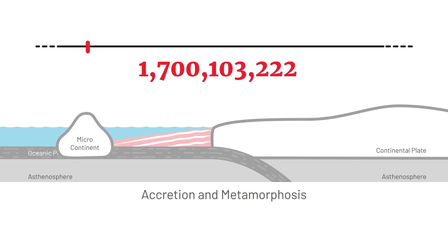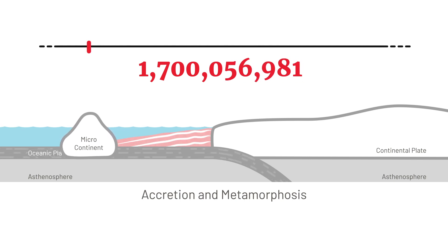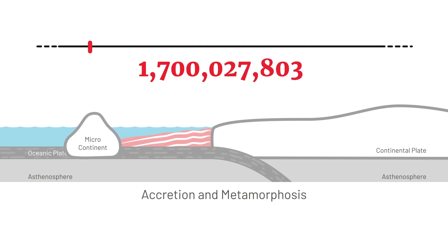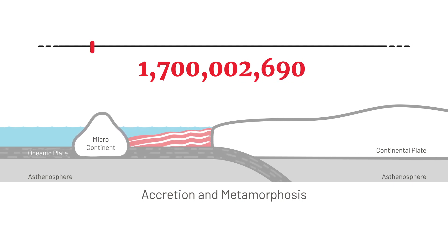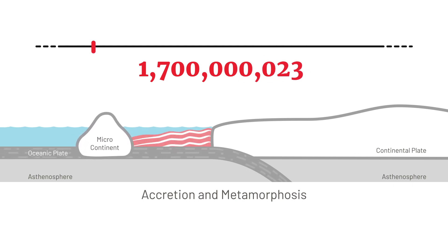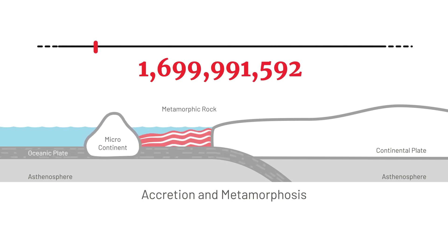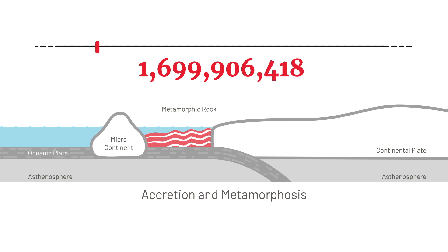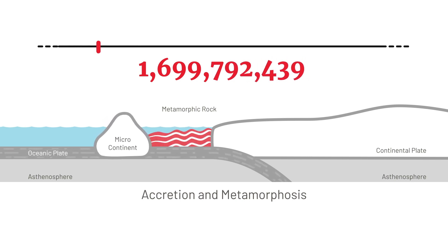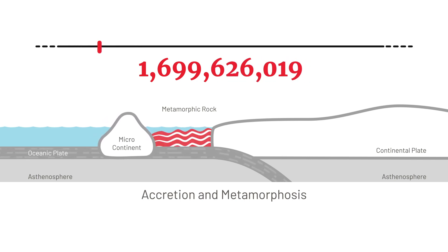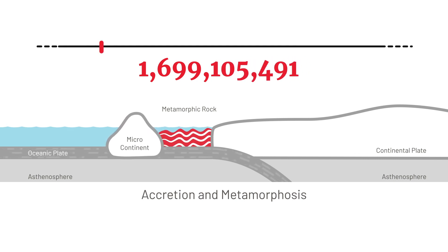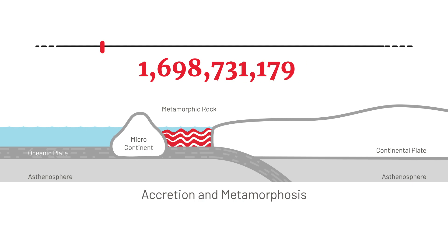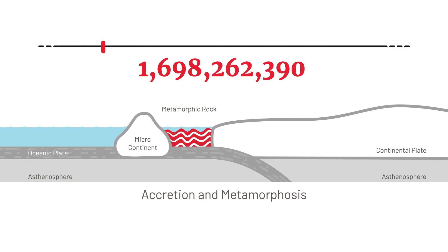They connected together to form a larger continent — that's basically how North America formed, piece by piece as little micro-continents accreted on. During this accretion at about 1.7 billion years ago, there was a lot of heat and pressure, and this marine sedimentary rock became altered and deformed and turned into the gneiss that we see around me, on the mountain peaks and in the boulders.